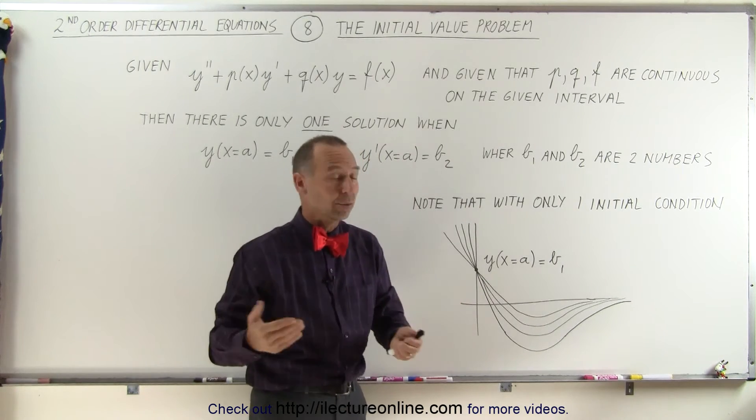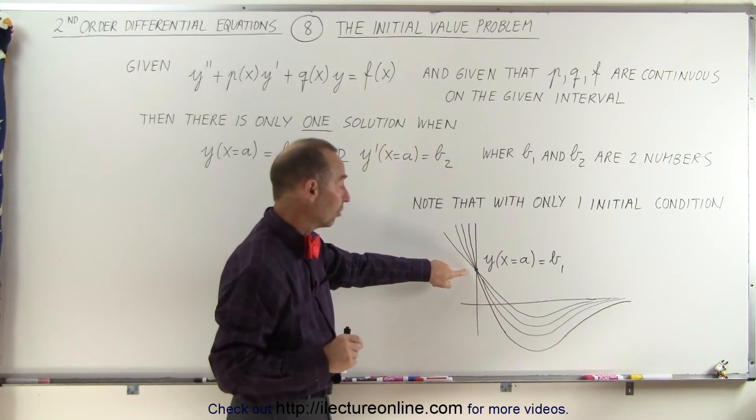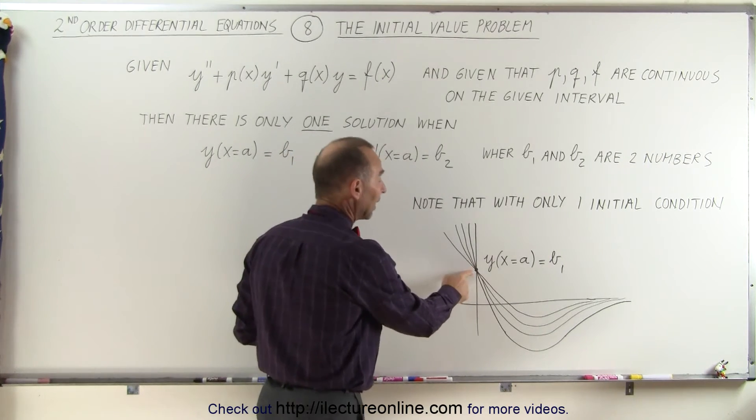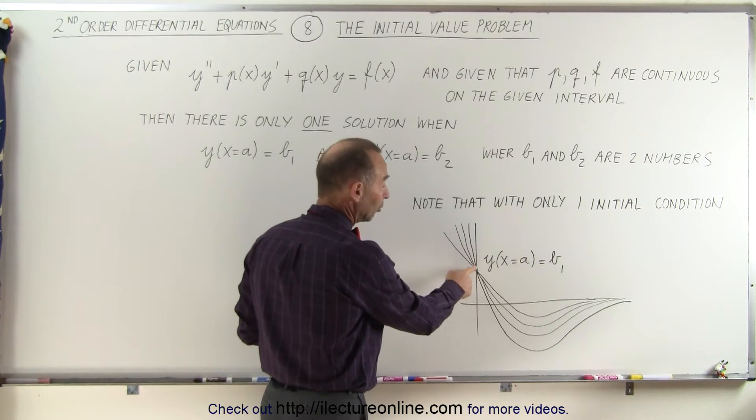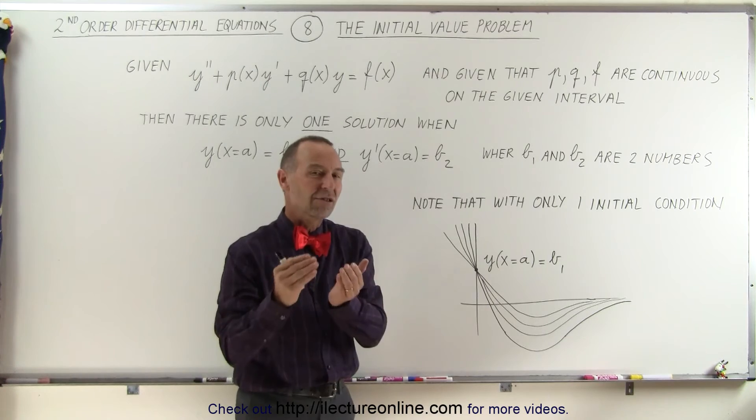And you can see there's multiple solutions to that, all of them which have the same initial condition for the function. But none of them have the same initial condition for the derivative of that function at that point. Because if you look at the slope at that point, you can see that each of the functions has a different slope.